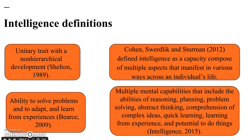There is no official definition of intelligence and the concept has been changing over years. Shelton (1989) described it as a unitary trait with a non-hierarchical development. Beers (2009) defined it as the ability to solve problems and to adapt and learn from experiences. Cohen, Swerdlik, and Sturman (2012) defined intelligence as a capacity composed of multiple aspects that manifest in various ways across an individual's life.